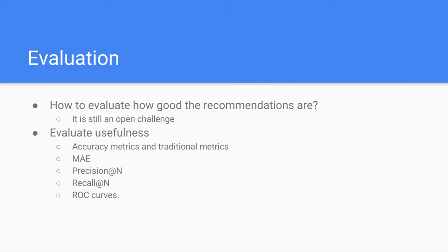In order to provide useful recommendations for users, predictions issued by a recommender system need to be evaluated. However, evaluation is still an open challenge in recommender systems. Traditionally, machine learning classification metrics have been used for evaluating predictions, such as accuracy, mean accuracy error, and precision recall. These metrics have been criticized for not actually measuring what the user needs, and they are known for training recommenders to solidly issue predictions related to what the user usually consumes.